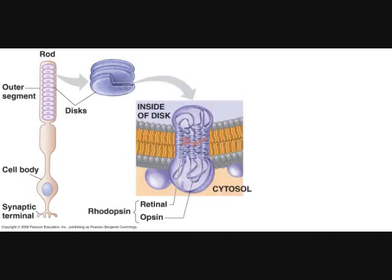Rhodopsin, opsin, and retinal. Rhodopsin is the visual pigment of rod cells. It consists of two parts: a transmembrane protein called opsin, and a chromophore, or pigment molecule, called retinal, which is derived from vitamin A. Opsin is a member of a large family of related receptor proteins called GPCRs, or G protein-coupled receptors. Like all other members, opsin has seven transmembrane alpha helices and a cytosolic region that interacts with a particular heterotrimeric G protein. For opsin, the G protein is transducin.